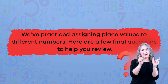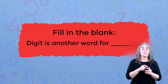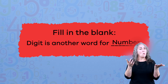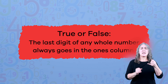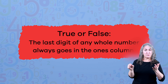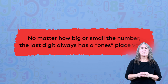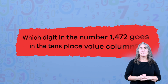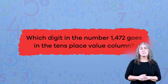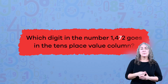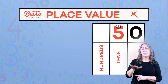Here are a few final questions to help you review. Fill in the blank: digit is another word for — number! True or false: the last digit of any whole number always goes in the ones column. True! No matter how big or small the number, the last digit always has a ones place value. Which digit in the number one thousand four hundred and seventy-two goes in the tens place value column? Did you say seven? Fantastic work, number experts!